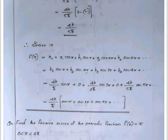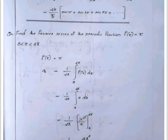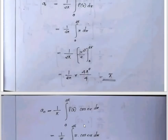Find the Fourier series of the periodic function f of x equals x, for 0 less than x less than 2π. Compute a0 equals 1 over 2π times integral from 0 to 2π of x dx equals 1 over 2π times x squared over 2 evaluated from 0 to 2π, giving a0 equals π.